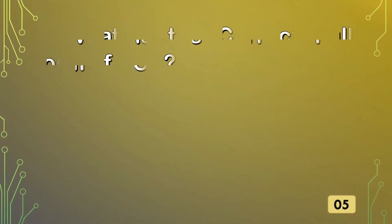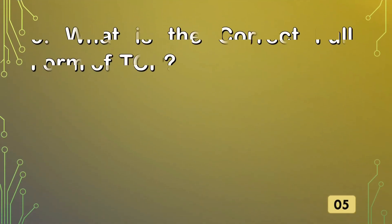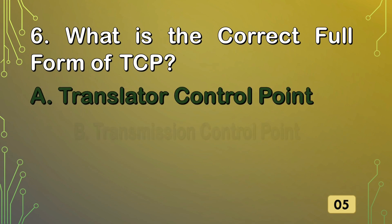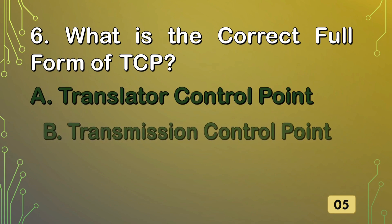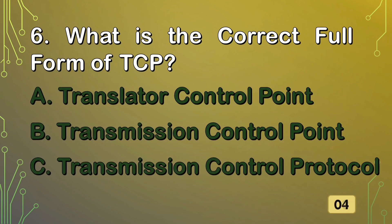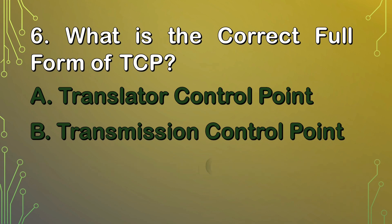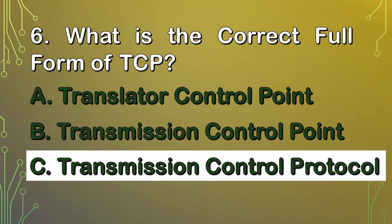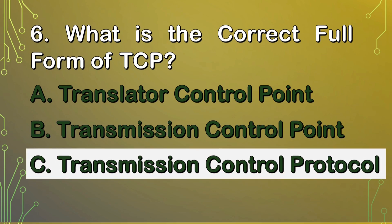What is the correct full form of TCP? Option A. Translator Control Point. B. Transmission Control Point. Or C. Transmission Control Protocol. The right answer is C. Transmission Control Protocol.